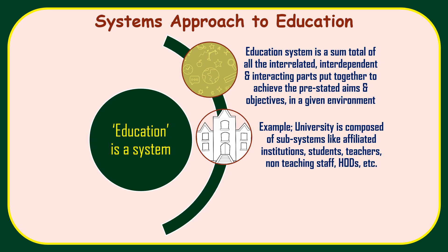All these systems are somewhere completely interrelated, interdependent on each other and they are constantly interacting for the smooth functioning of the institution — proper process ho, jo bhi input aaya hai, uska proper effective process ho aur proper output bahaar nikle to the society or to the environment. This is what education system is all about.